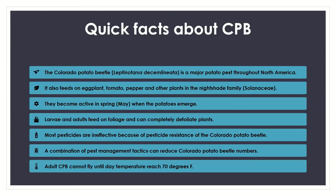These guys usually become active in spring, around May. Importantly, the adult beetles that emerge after winter can't really fly or move very far until average temperatures reach about 70 degrees. Around now we've started having consistent 70-degree days, so they'll start being active and looking for a host plant. Almost all stages of this bug tend to feed and defoliate crops. Most pesticides are ineffective, but there are some really great mechanical practices with strong results we'll talk about today.